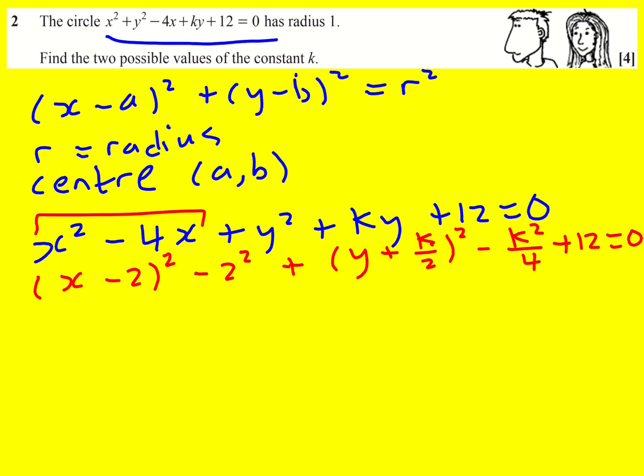Okay this is looking pretty good. Let's just rewrite it as x minus 2 all squared plus y minus k over 2 all squared and that's going to equal 4 because minus 2 squared is minus 4 so I'm going to add 4 onto both sides minus 12 plus k squared over 4.